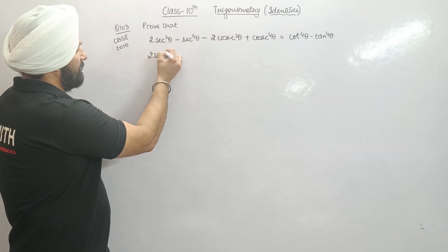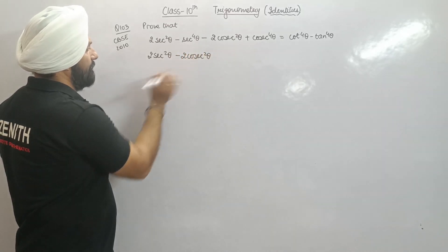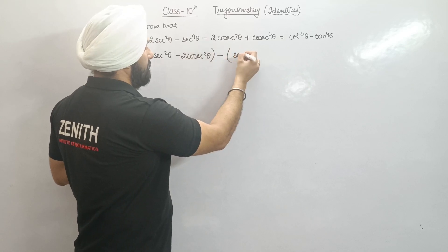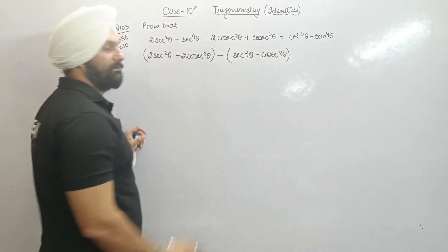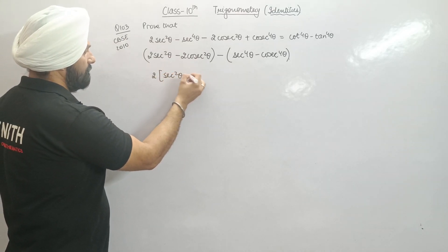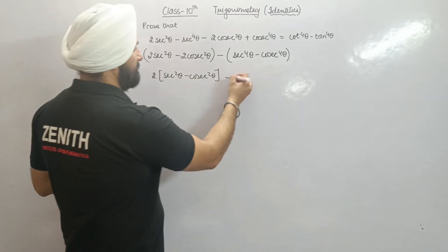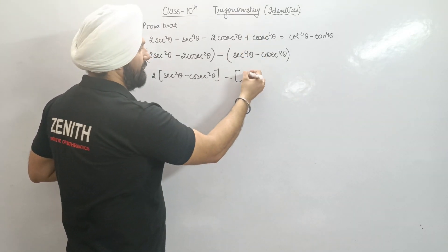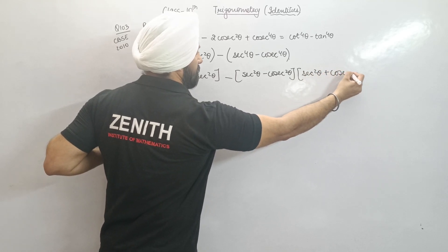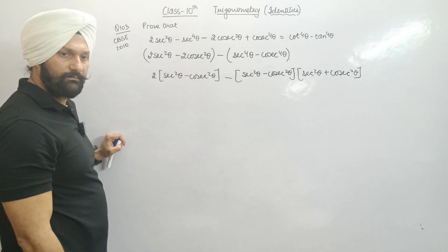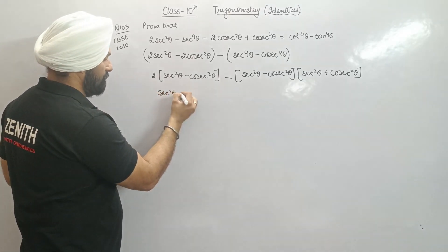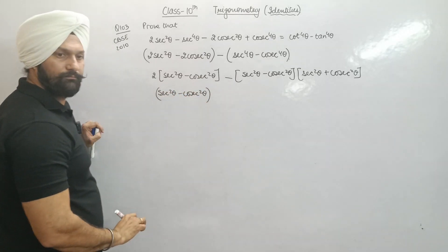So I grouped them differently. I kept 2sec²θ minus sec⁴θ as one set, and then taking minus common, the second set became cosec⁴θ minus cosec²θ. Taking 2 common from within the first set, outside we get sec²θ, giving us sec²θ(2 minus sec²θ), and similarly sec²θ squared — that is sec⁴θ.